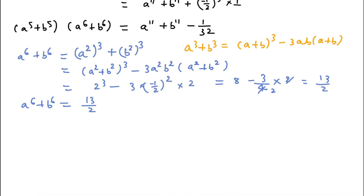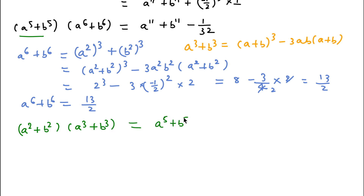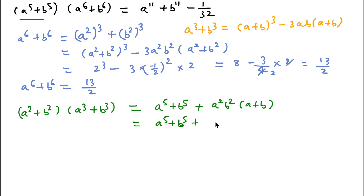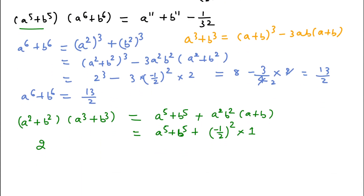Now I will calculate a to the power 5 plus b to the power 5. We can write a squared plus b squared times a cubed plus b cubed, and if we multiply these two, we get a to the power 5 plus b to the power 5, plus a squared b squared times a plus b. Rearranging, a squared plus b squared is 2, and a squared b squared is ab squared, which is minus 1 over 2 squared equal to 1 over 4, and a plus b is 1. But we still need the value of a cubed plus b cubed.